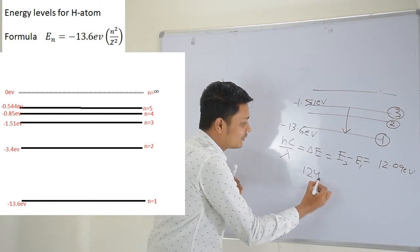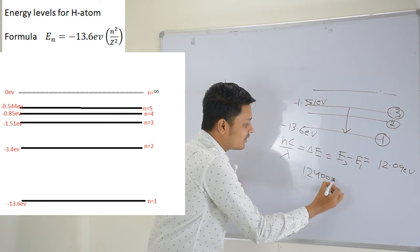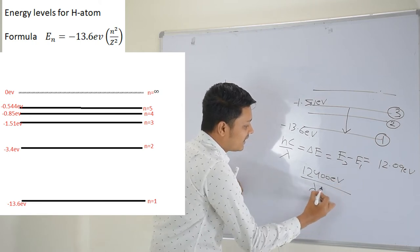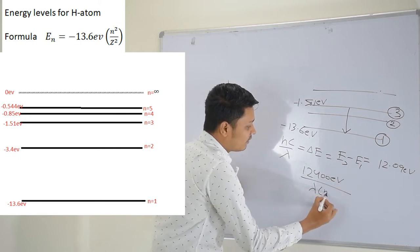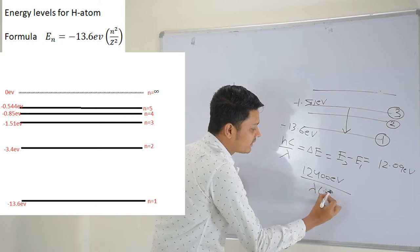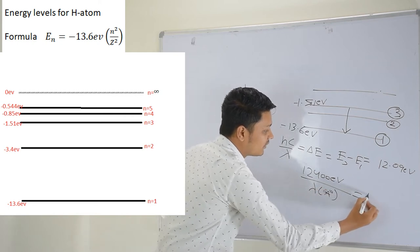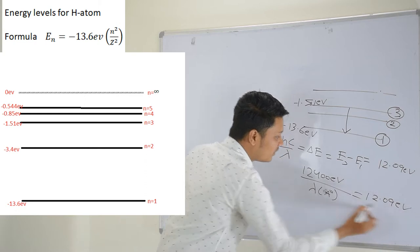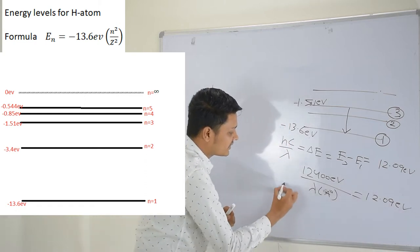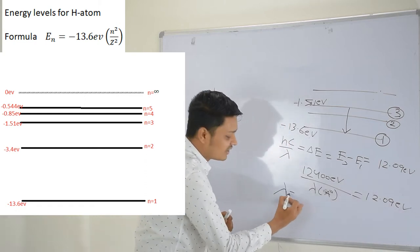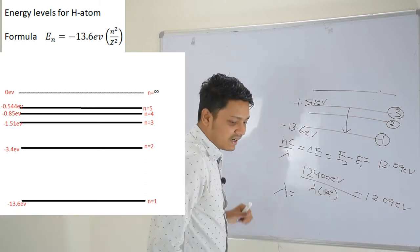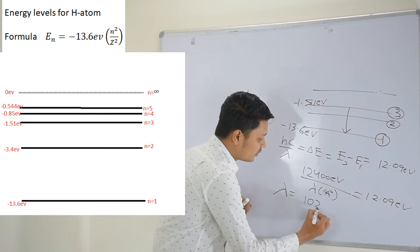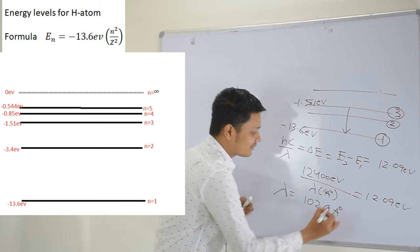Using hc equals 12400 eV·Å, and setting lambda in Ångström equal to 12400 divided by 12.09 eV, after solving this you will get a wavelength of around 1026 Ångström.